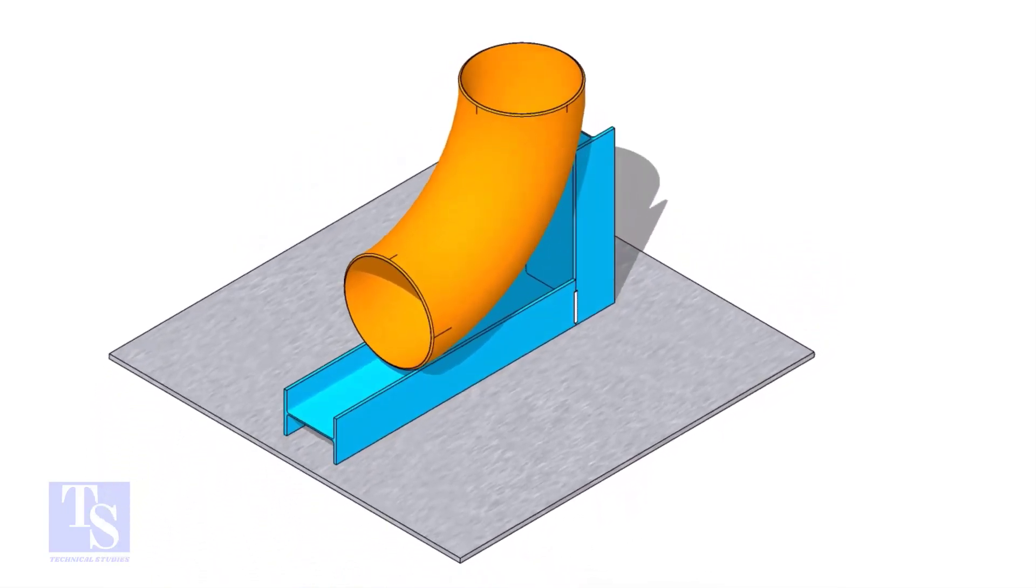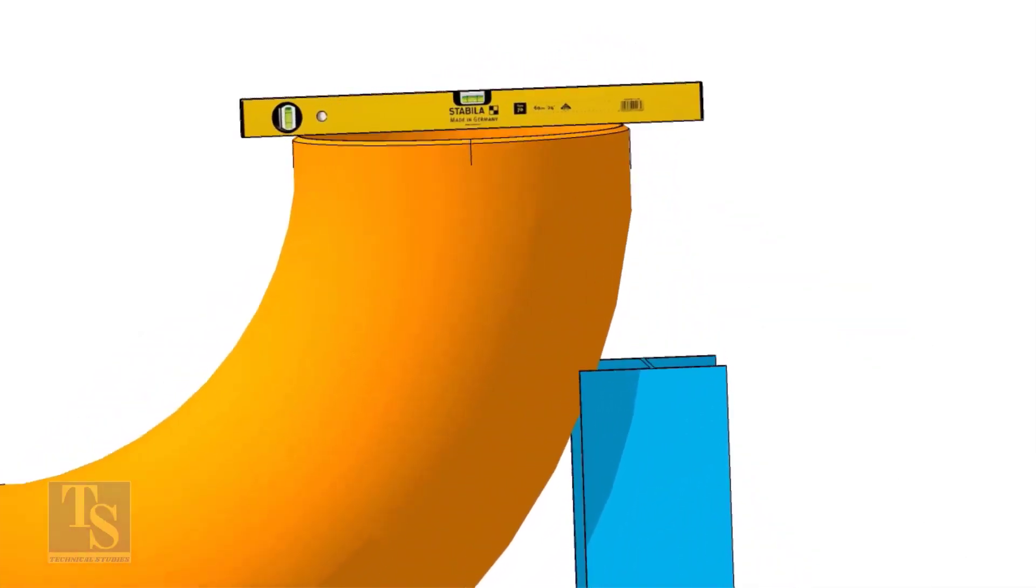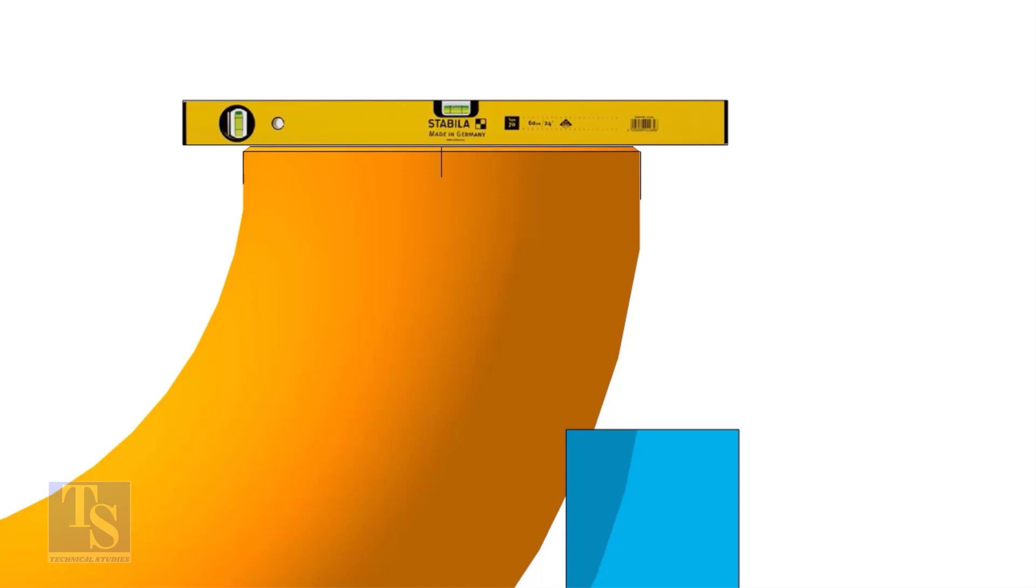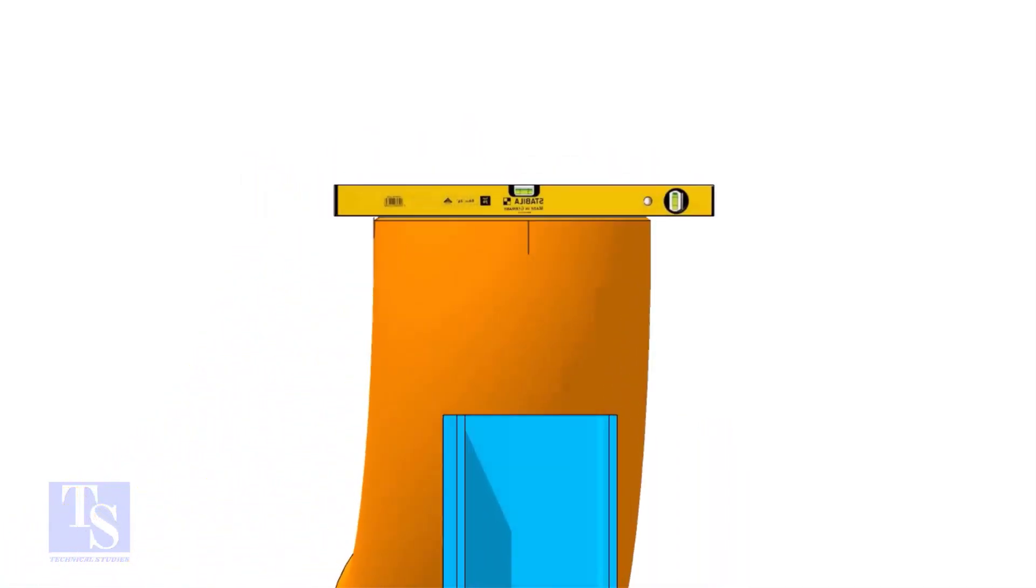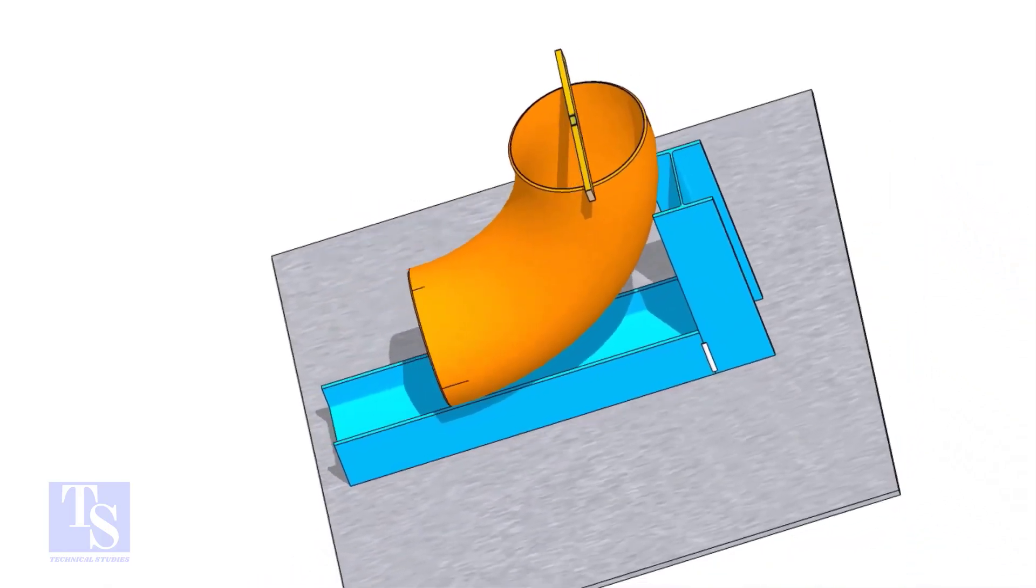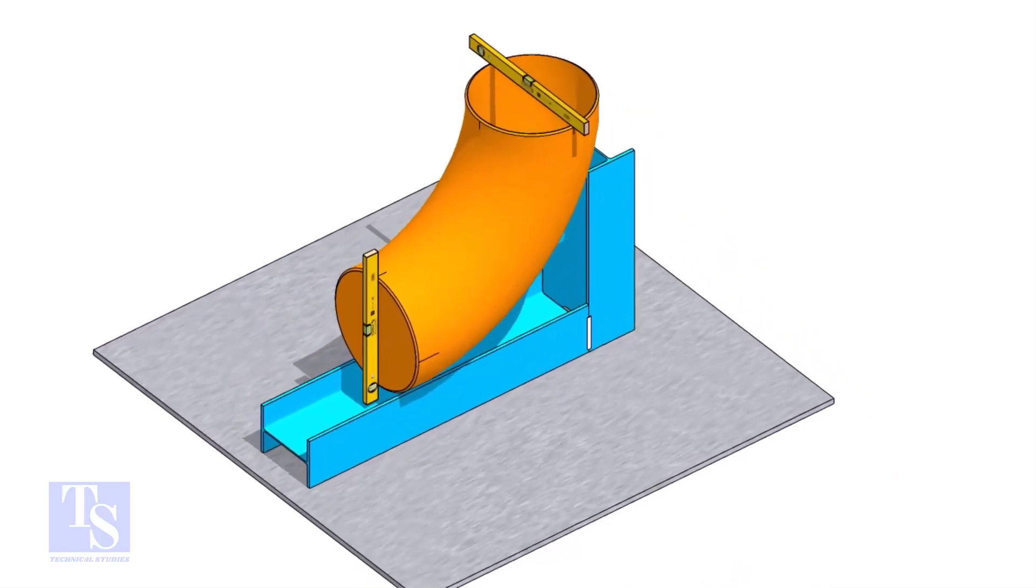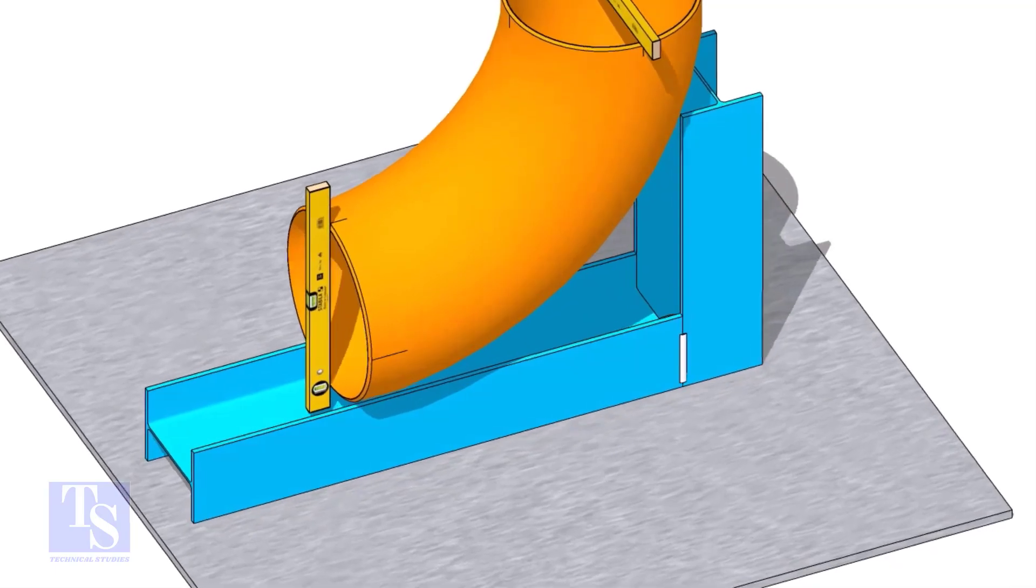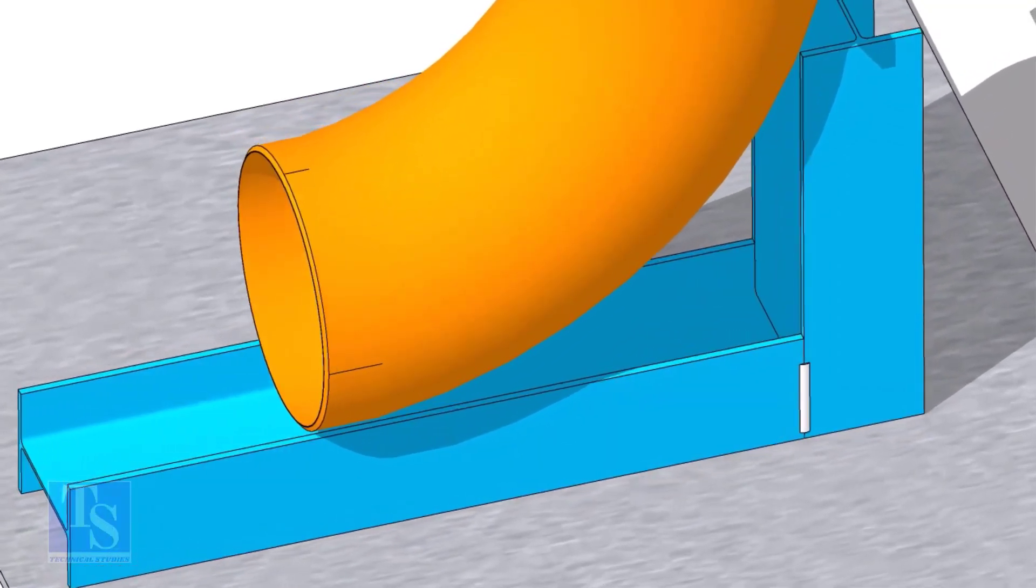Put the elbow in the stand as shown and correct the level. After leveling, tack weld two clates to stop the elbow from sliding down.